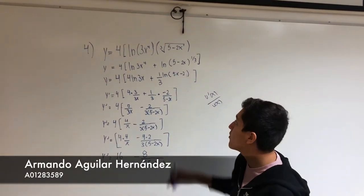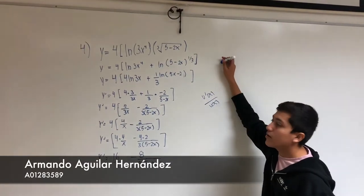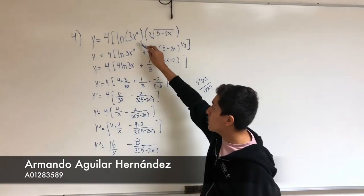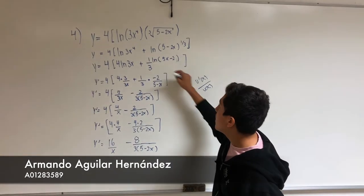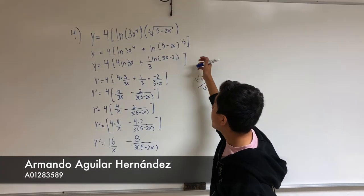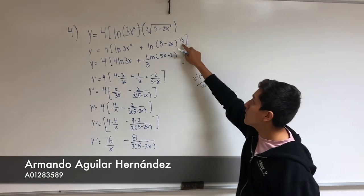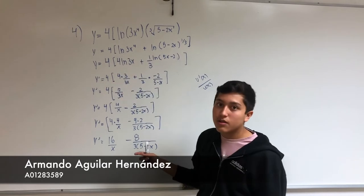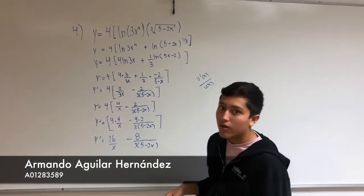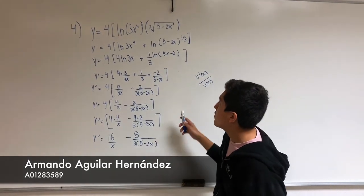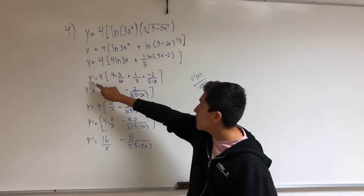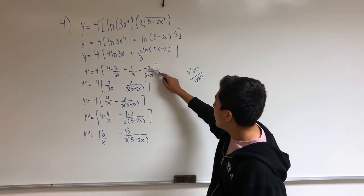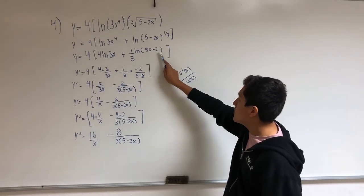Now I'm going to do problem number four. The first step is to split the logarithms using the product property — here we already have them split. The next step is to bring down the exponents: 1/2 is here and 4 is here, using the power property of logarithms. Then I find the derivative: 3 over 3x is the derivative of this, and minus 2 over 5 minus 2x is the derivative of this logarithm, using the standard formula.